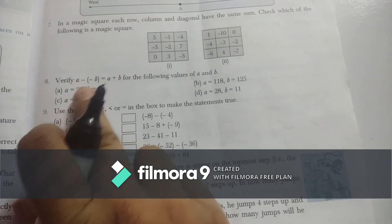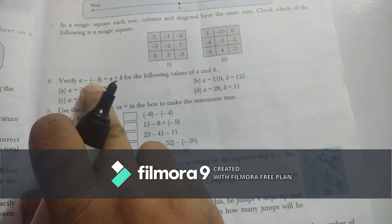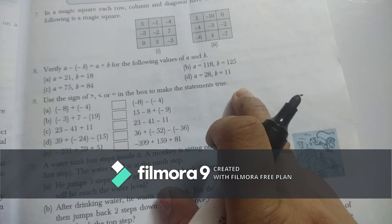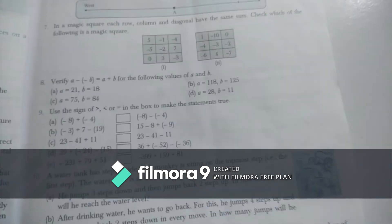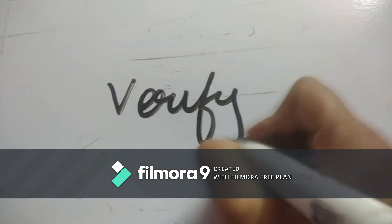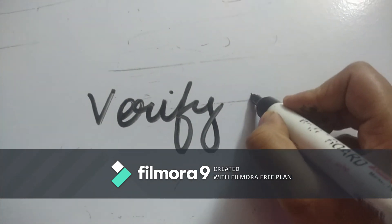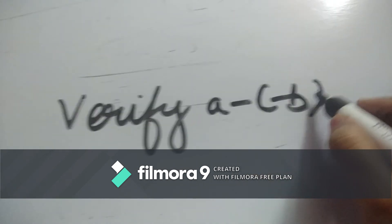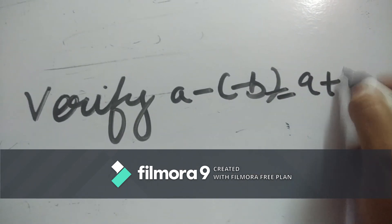Question 8: Verify that a minus (minus b) equals a plus b. We have to verify this. We take values randomly — let a equals 21 and b equals 18. Putting these values into the equation: a minus (minus b) should equal a plus b.